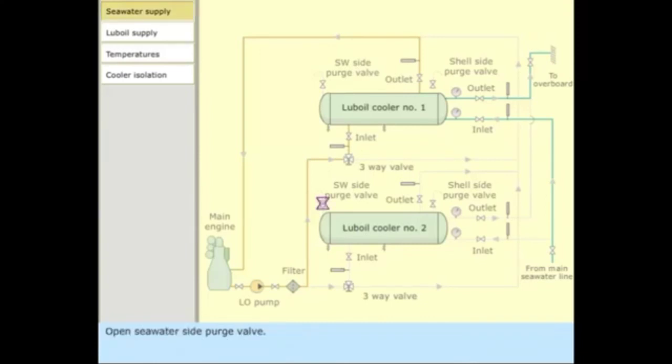Open sea water side purge valve. Open sea water inlet valve by one turn. When the water comes out of the purge valve, open the sea water outlet valve gradually to full open position. This will ensure that no air is trapped in the sea water side. Close the purge valve. Open the inlet valve fully.